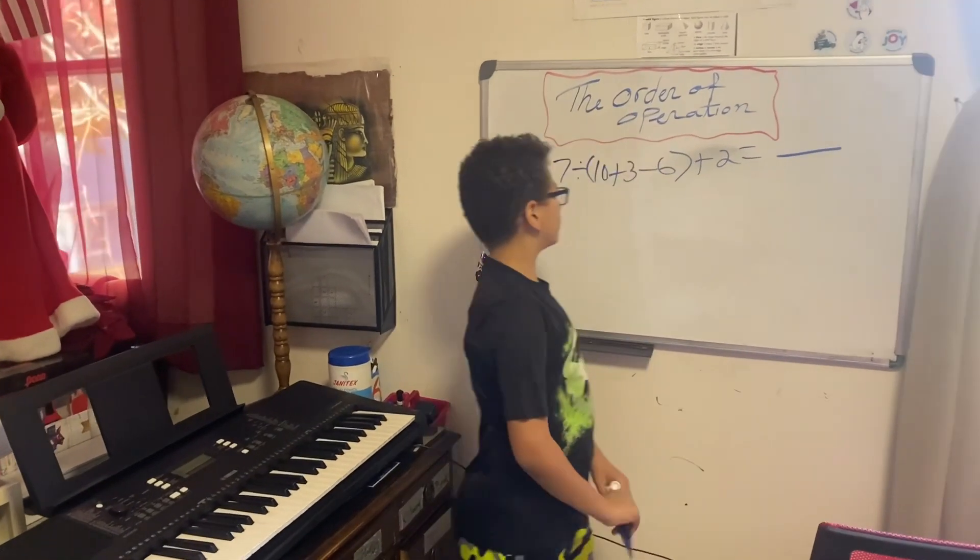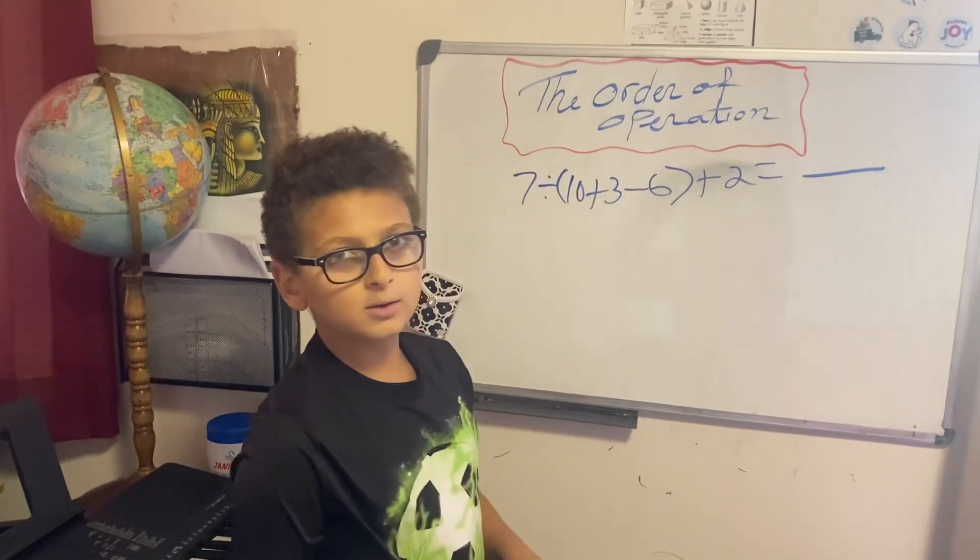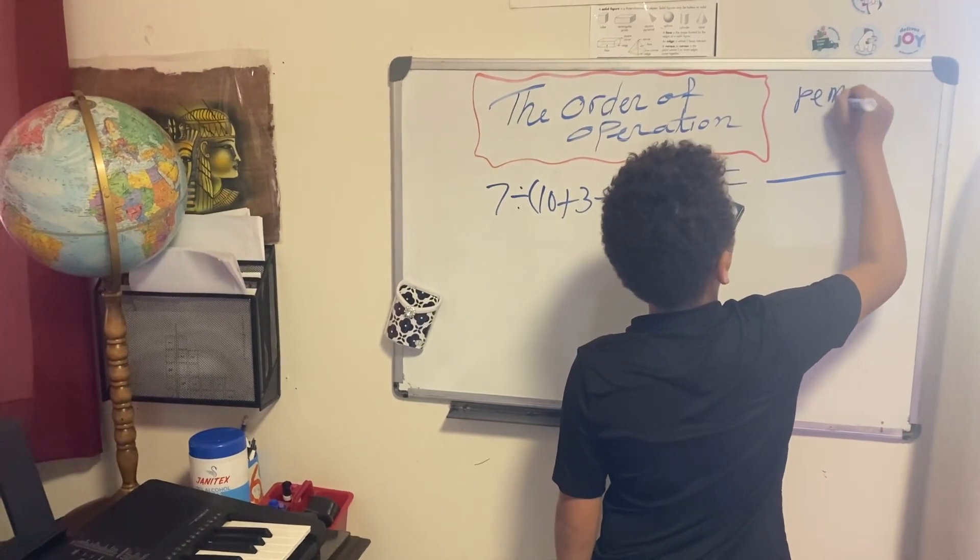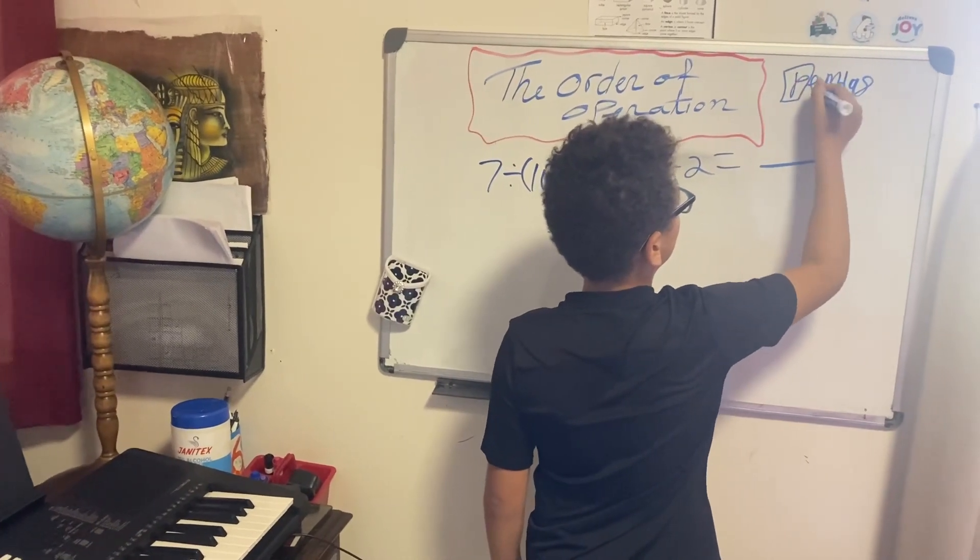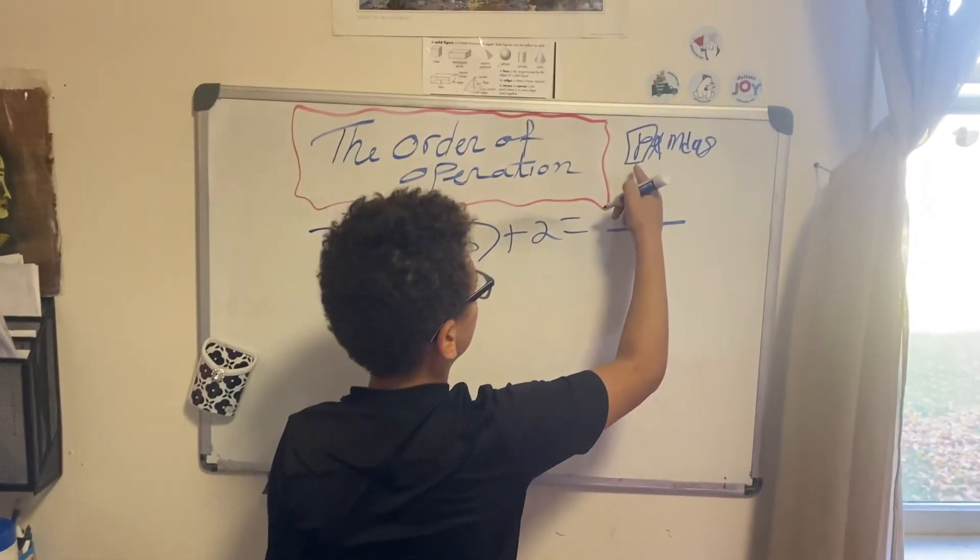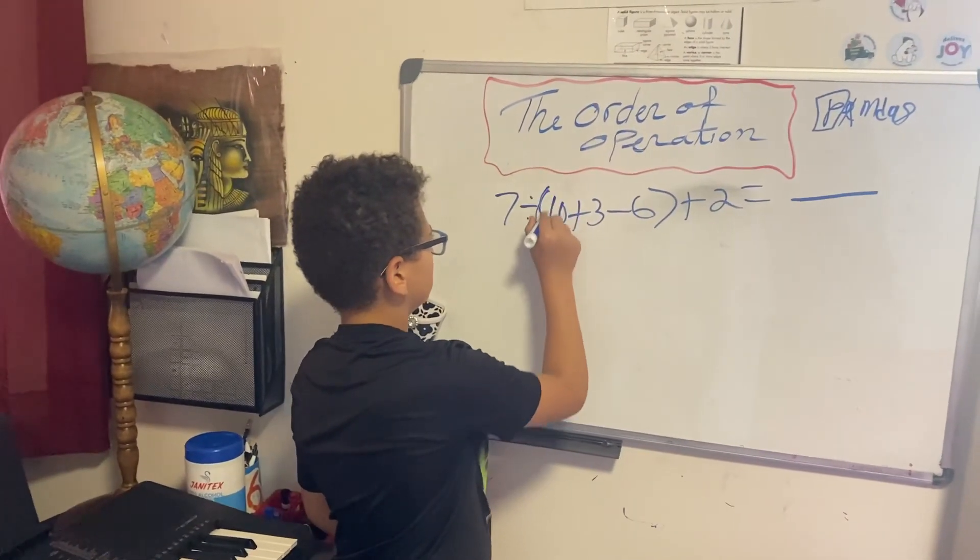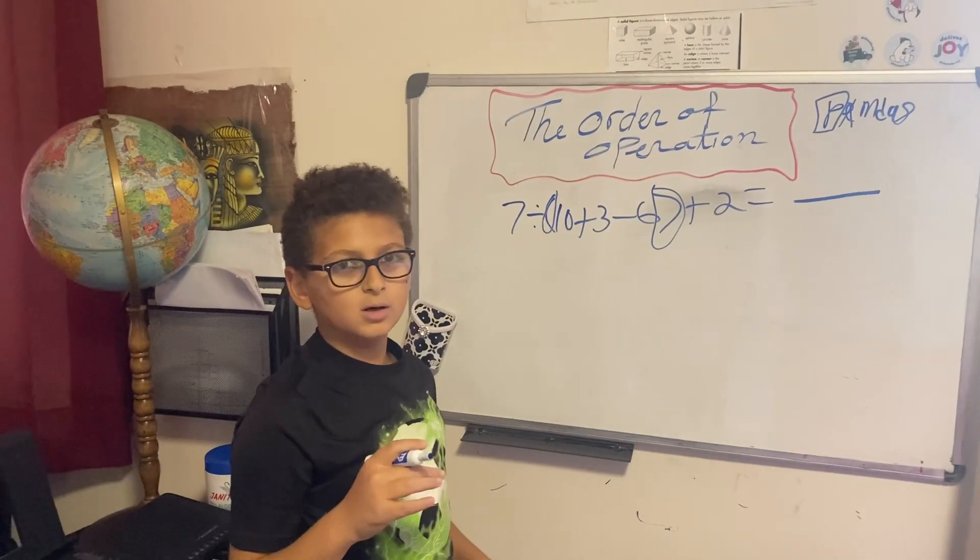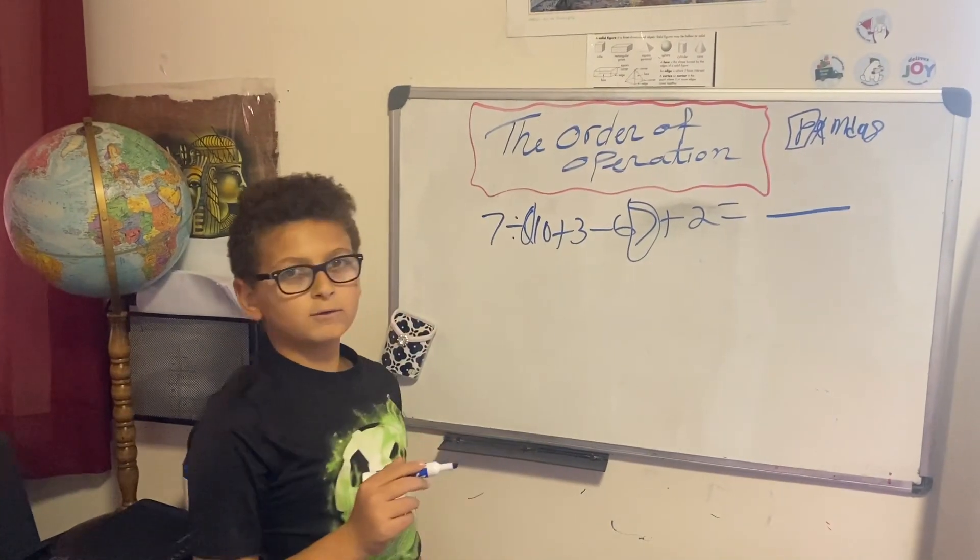Right now I'm going to give you an example. To use order of operations, we're not using exponents right now so we'll just mark it off. P stands for parentheses, so there are parentheses right here, so we start with the problems in the parentheses.